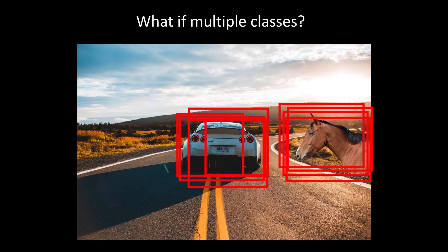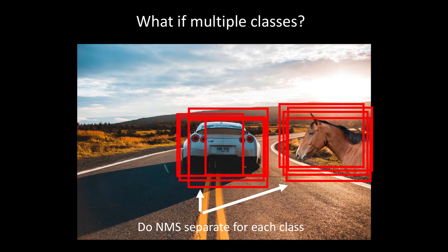What if we have multiple classes? Let's say we have one car object and a horse. What we do then is perform non-max suppression separately for each class. Non-max suppression needs to be applied for each class independently — we can't compare bounding boxes and calculate IOUs across classes because that wouldn't really make sense.